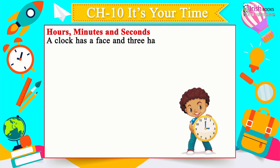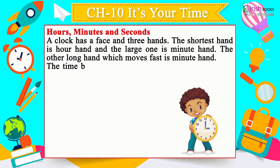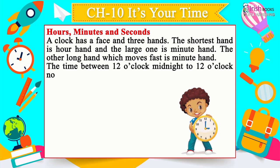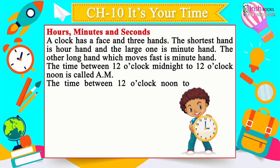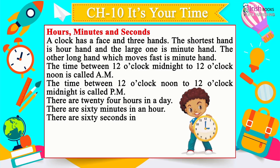A clock has a face and three hands: the shortest is the hour hand, the large one is the minute hand, and the other long hand that moves fast is the second hand. The time from 12 o'clock midnight to 12 o'clock noon is called AM; from noon to midnight is PM. There are 24 hours in a day, 60 minutes in an hour, and 60 seconds in a minute.